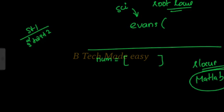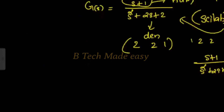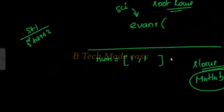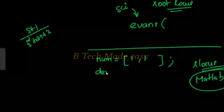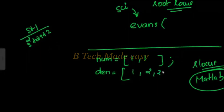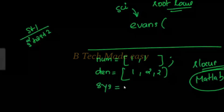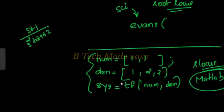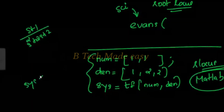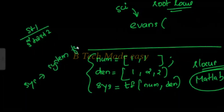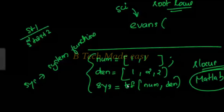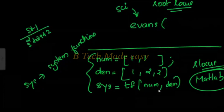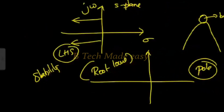In MATLAB, you can define the s-plane pole coefficients. Use the numerator coefficient 1, 1 and the denominator coefficient 1, 2, 2. Then use sys equals tf(num, den). The sys variable means system function. You can then use the transfer function with its numerator and denominator, and the transfer function is displayed.